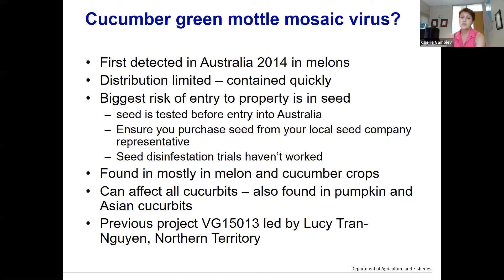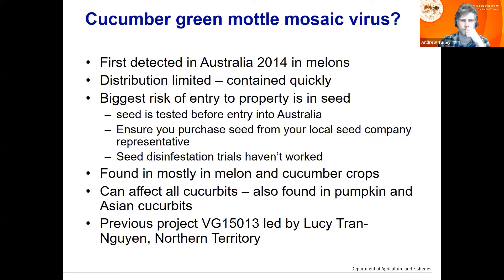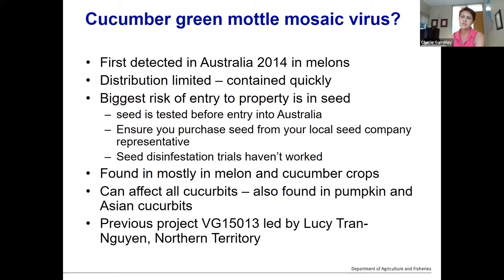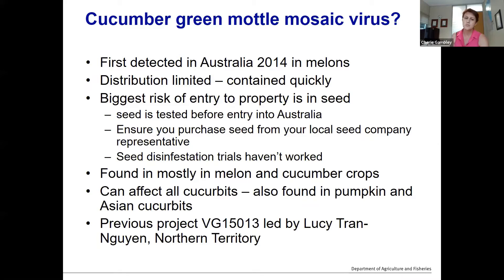The biggest risk of entry to a property is through seed. Seed is tested through quarantine before or on arrival in Australia, so you really need to ensure that you purchase seed from your local seed company representative and that it's been certified. There has been some research into disinfestation trials of seed, but it doesn't really work with CGMMV, so it's really important to use certified seed.